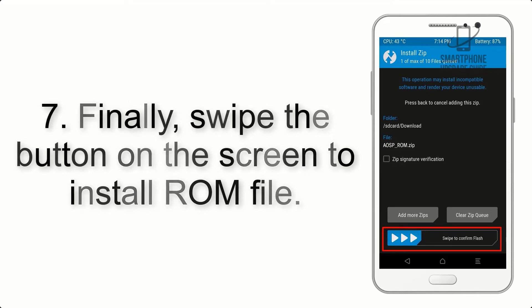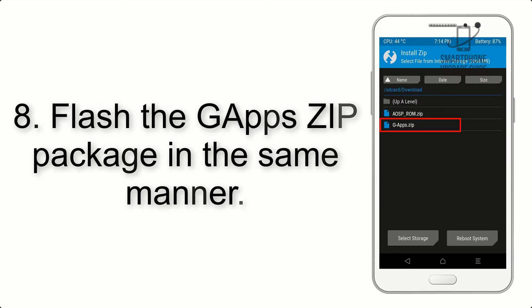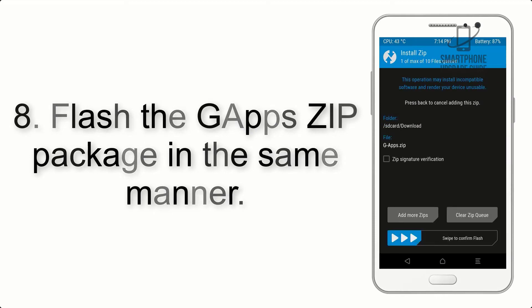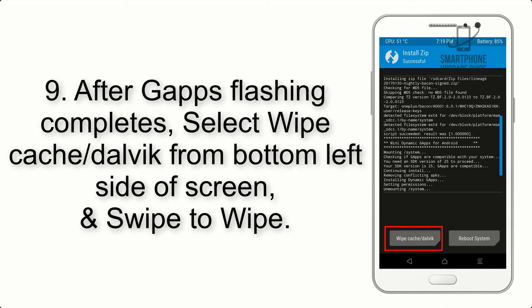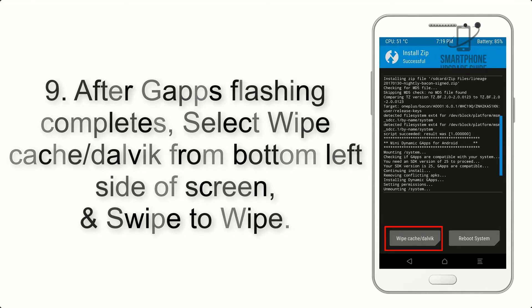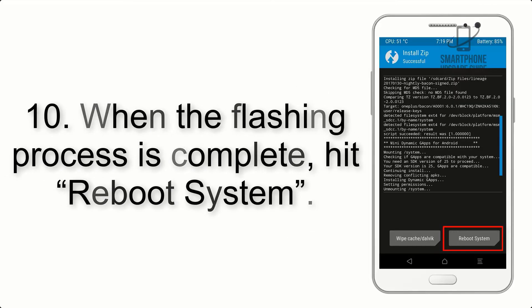Step 7: Swipe the button on the screen to install the ROM file. Step 8: Flash the GApps zip package in the same manner. Step 9: After GApps flashing completes, select Wipe Cache and Dalvik from the bottom left side of the screen and swipe to wipe.